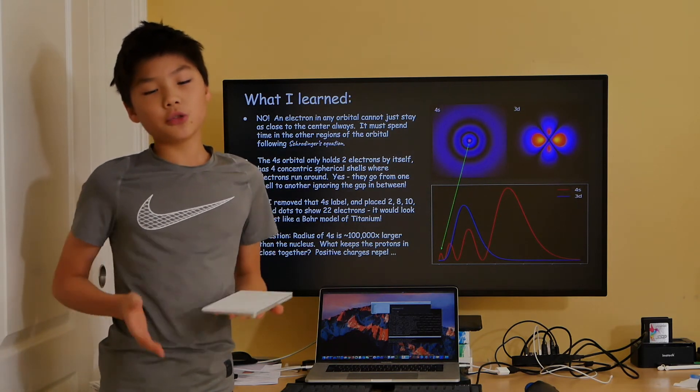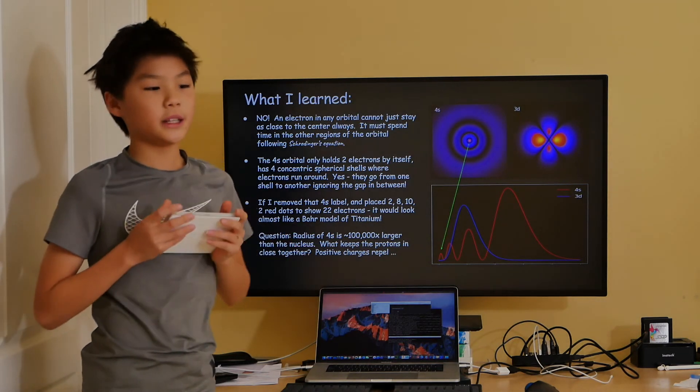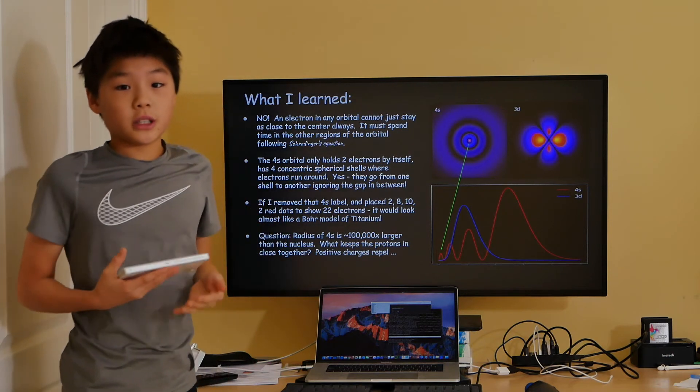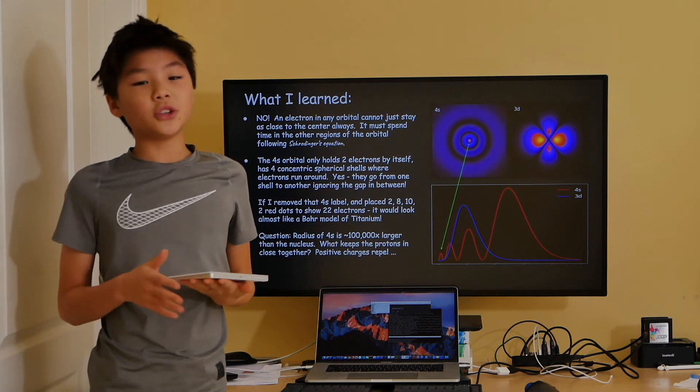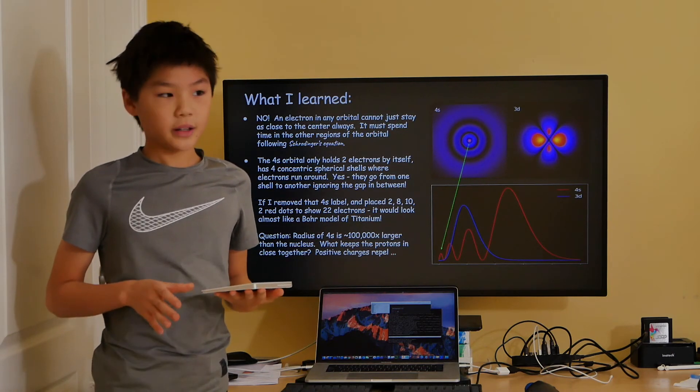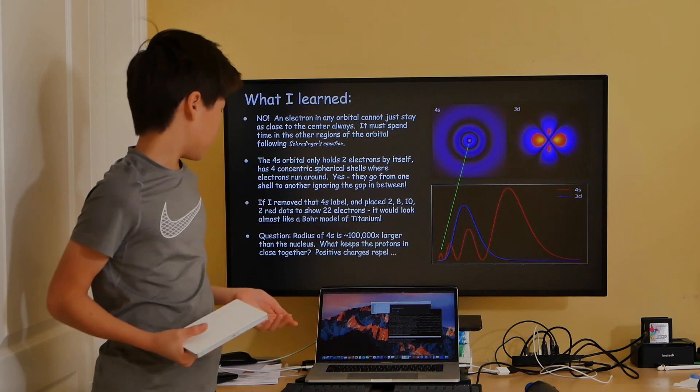As with any learning, new questions arise. When I was building my 3D model of titanium, I had a lot of difficulty trying to make it scale, because the nucleus has to be 100,000 times smaller than the 4s orbital, the radius.